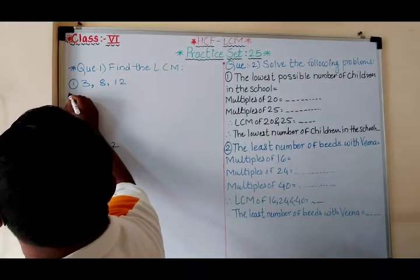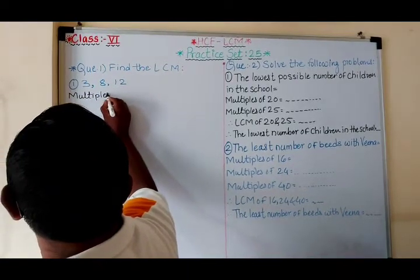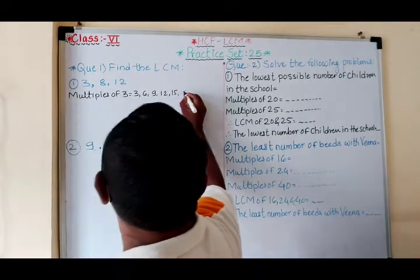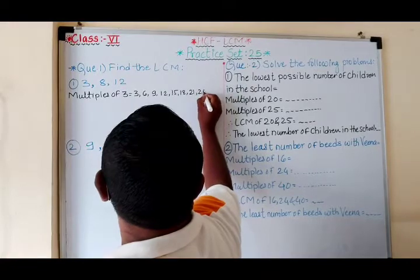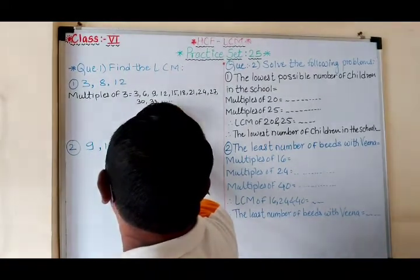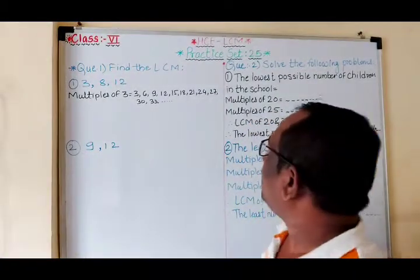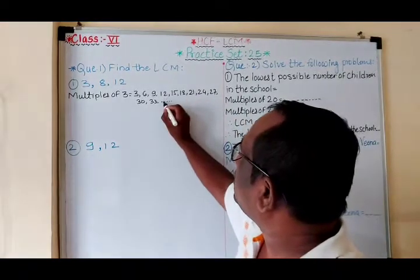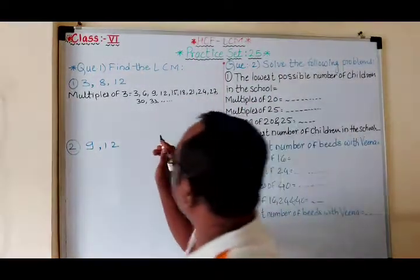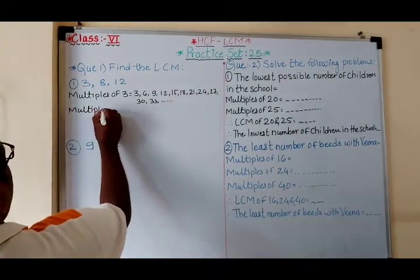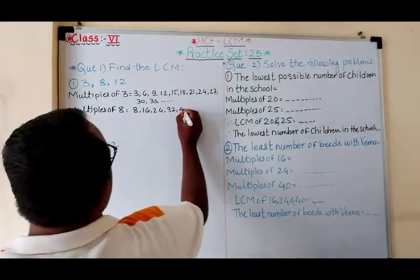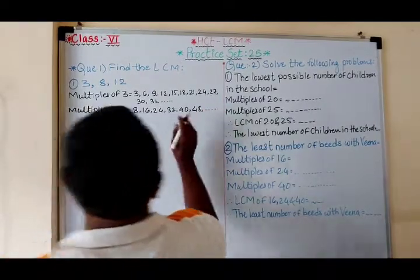For example, now for 3 — first we will write the multiples of 3. Multiples of 3 go up to 15 and beyond. If we need more, we will write more. So up to 33, it's okay. Then we will write the multiples of 8 — multiples of 8 up to 48.